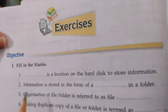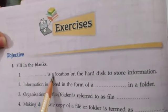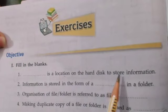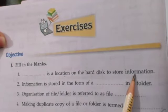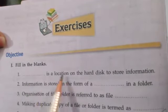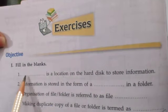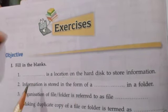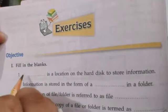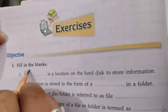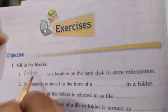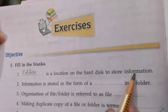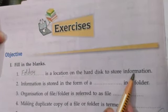First one: dash dash is a location on the hard disk to store information. What is used to store information in the form of files in the computer system? Yes — folder. So, folder is a location where information is stored in the form of files.